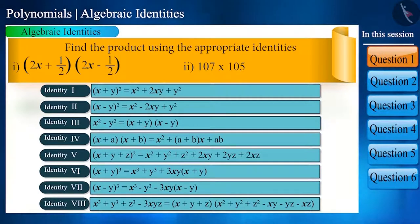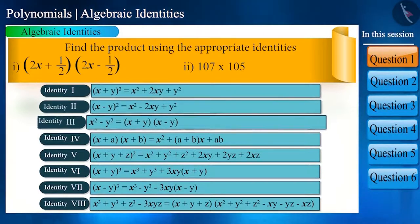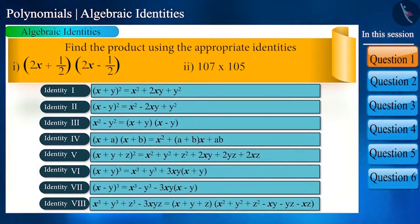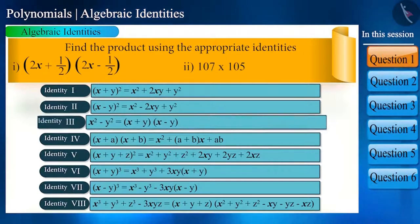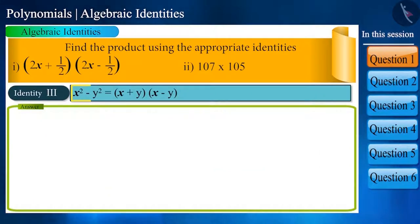To find the answer, we will have to see which identity this question resembles. That is, in which identity is there a sign of addition and subtraction between two terms. And that is identity 3: x² - y² = (x + y)(x - y).